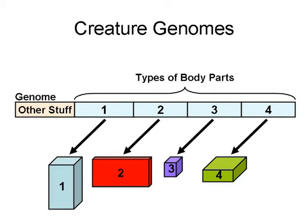And so the chromosome is set up roughly as the way that you see it here in the slide. There's a bunch of stuff at the beginning, which I won't bother getting into. And then there's a section for each of the different types of body parts, essentially.